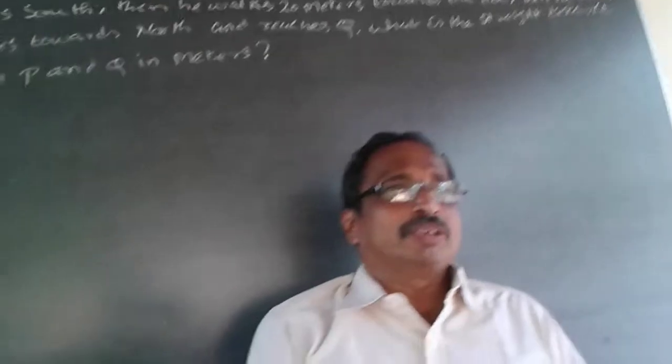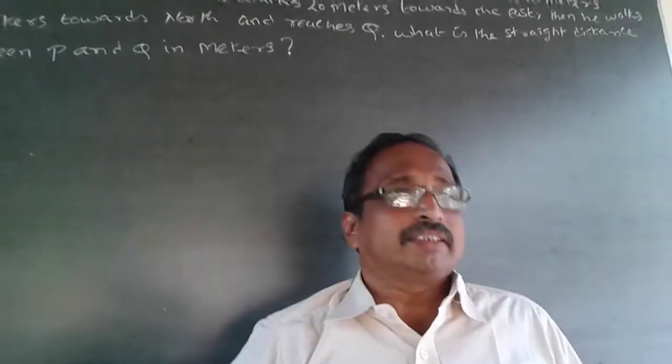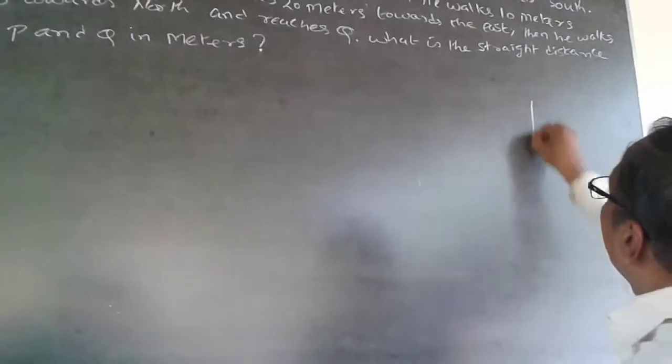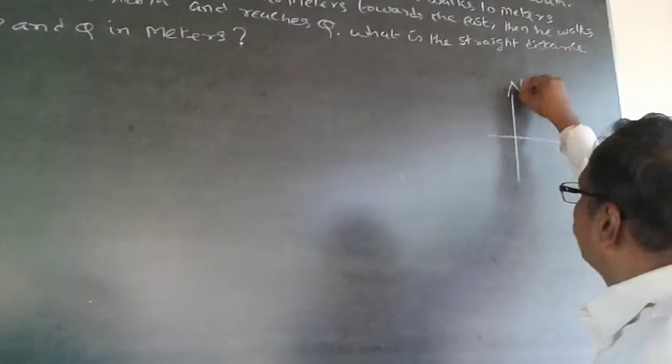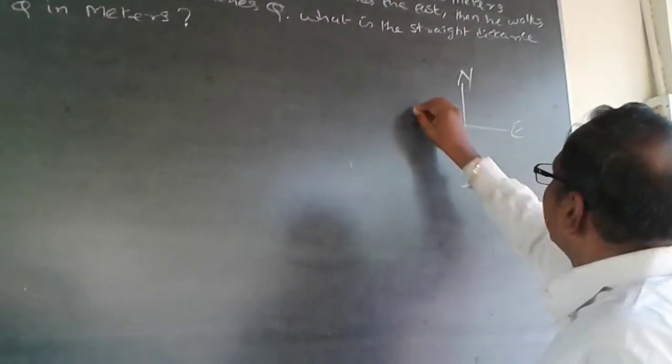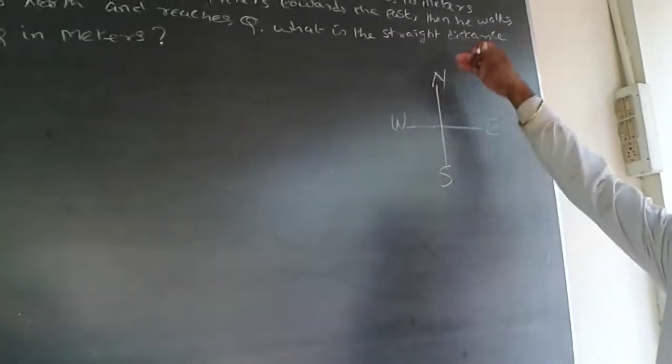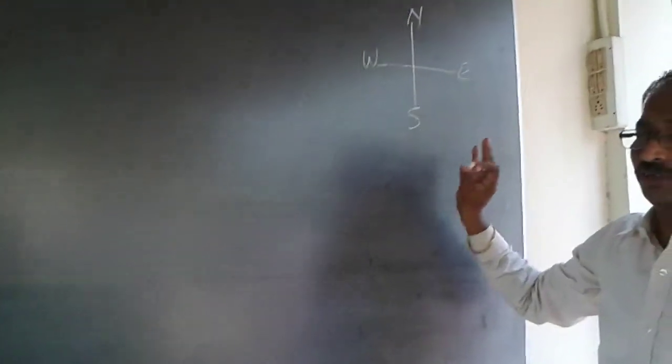This is a very easy problem, logical reasoning, talking on directions. See, this is the way we normally draw about north, south, east and west. So, whenever you draw towards the left, it will be west, towards your right will be east, above will be north and bottom will be south.